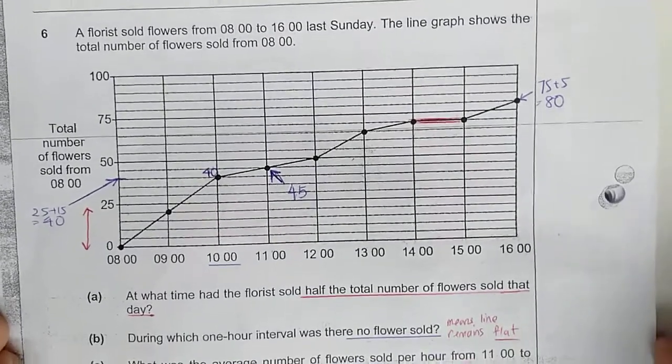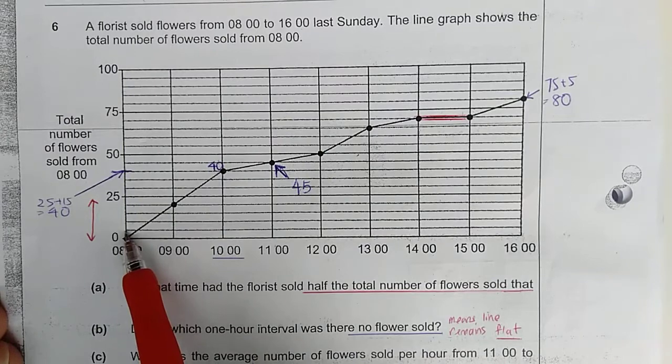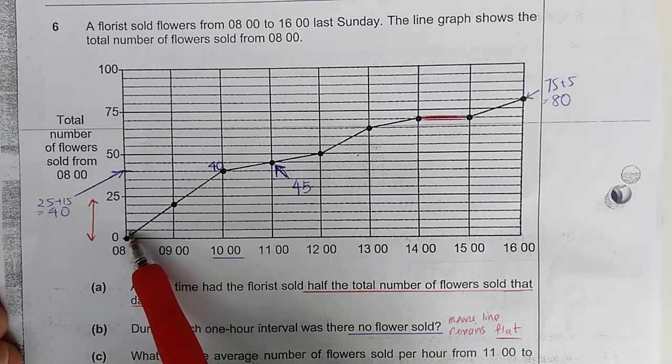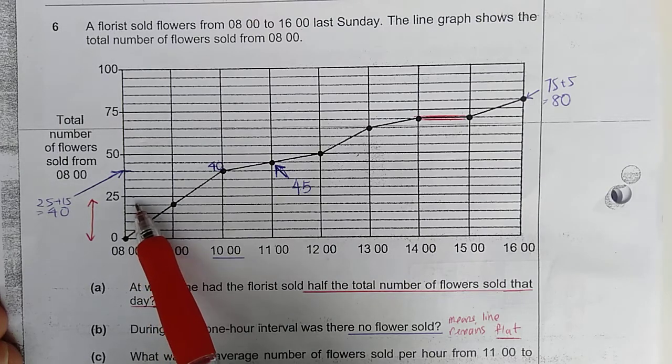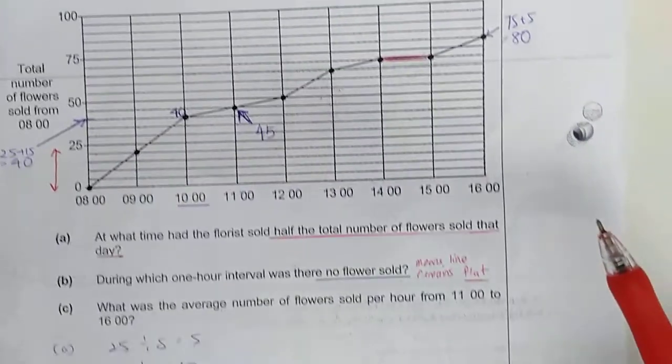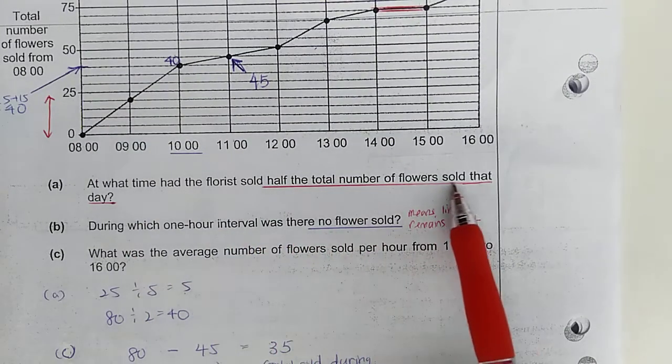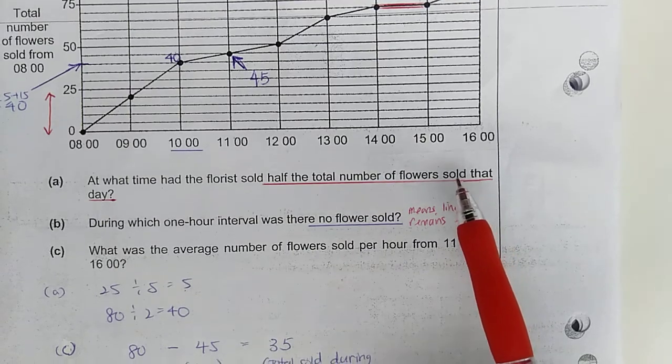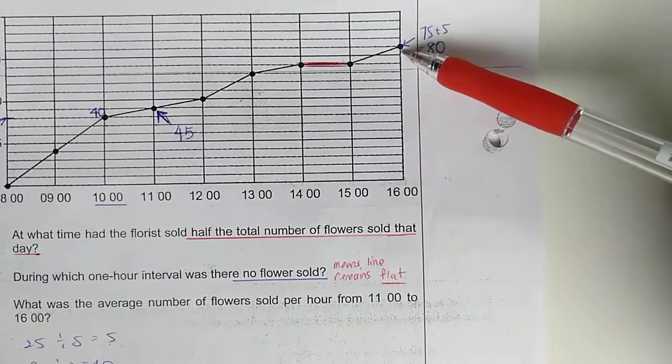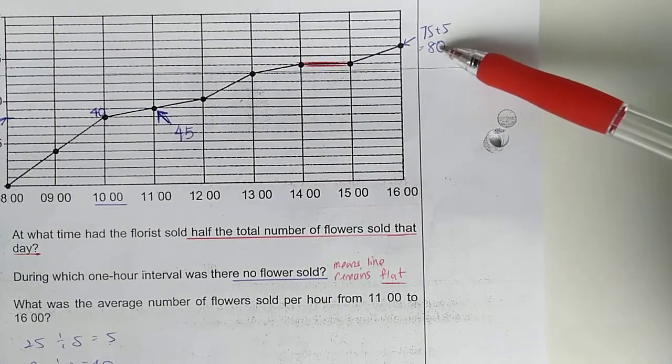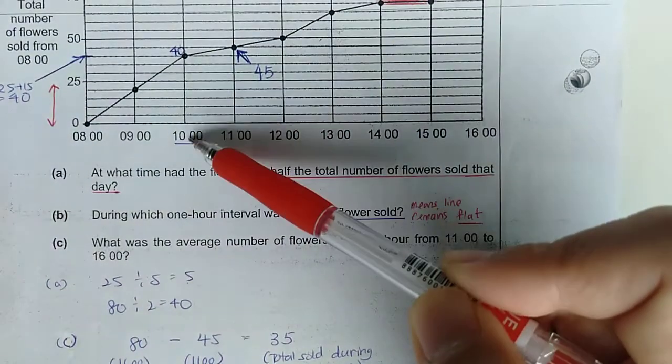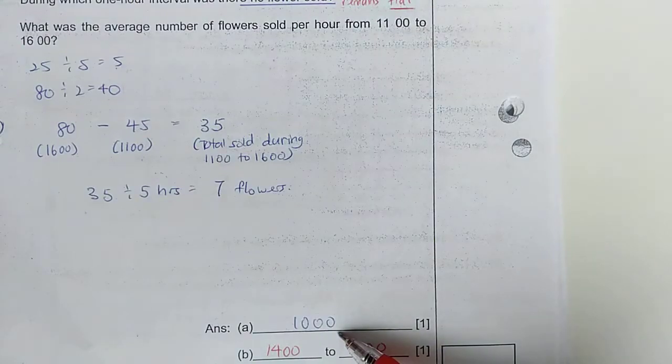So, here, in order to read the graph, you must first find out what is the size of each of this marking. So, here, you'll find out each of the markings here increases by 5. 10, 15, 20, 25. And then, find out what is the value of these dots here. First one, at what time had the florist sold half the total number of flowers? So, I found out each portion increased by 5. All together here, this is a total number is 80. So, half of 80 is 40. And where is 40? 40 is at 10 o'clock in the morning. So, first answer is 10 o'clock.